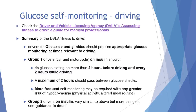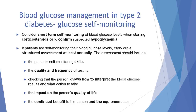For group 2 drivers on insulin — lorries and HGVs — the guidance is very similar to group 1 drivers on insulin but slightly more stringent, so it is advisable to review that guidance in more detail. We can also consider short-term monitoring of blood glucose when a patient is starting treatment on steroids or to confirm hypoglycaemia.